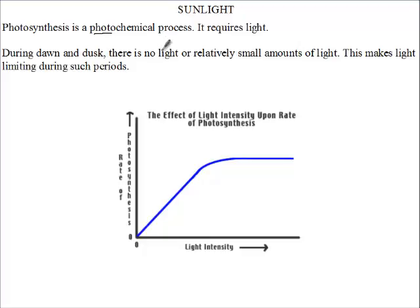Now light is a limiting factor at dawn and dusk. There is no light or relatively small amounts of light. So during such periods of the day, photosynthesis will go down.